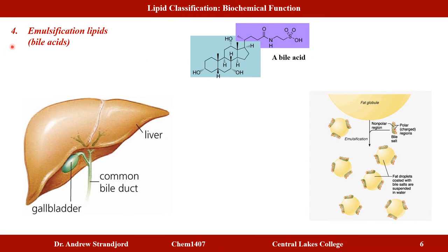The fourth class are the emulsification lipids, often called bile acids. They are produced in the liver. A bile acid contains sulfur, nitrogen, oxygen, and a fused four-membered ring system. Its function is to take fat globules in the body and break them up by making them polar, rendering them soluble in water so they can be carried through the bloodstream.